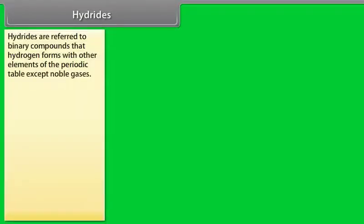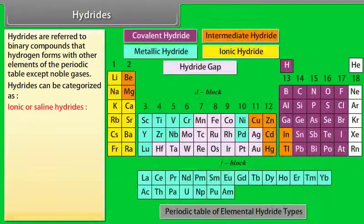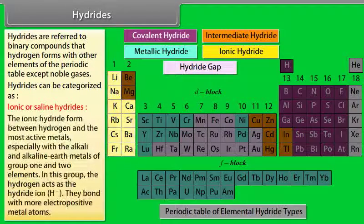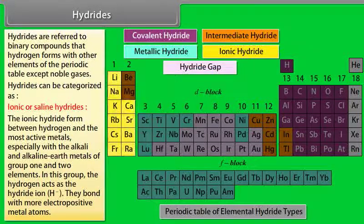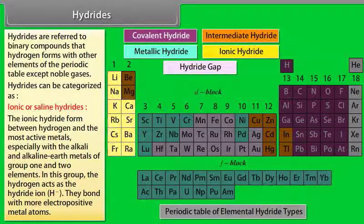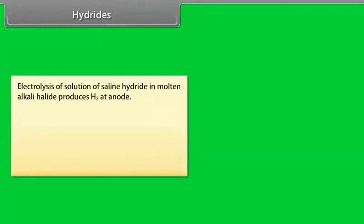Hydrides: Hydrides are referred to binary compounds that hydrogen forms with other elements of the periodic table except noble gases. Hydrides can be categorized as: Ionic or saline hydrides. The ionic hydride form between hydrogen and the most active metals, especially with the alkali and alkaline earth metals of group 1 and 2 elements. In this group, the hydrogen acts as the hydride ion. They bond with more electropositive metal atoms. Electrolysis of solution of saline hydride in molten alkali halide produces H2 at anode.